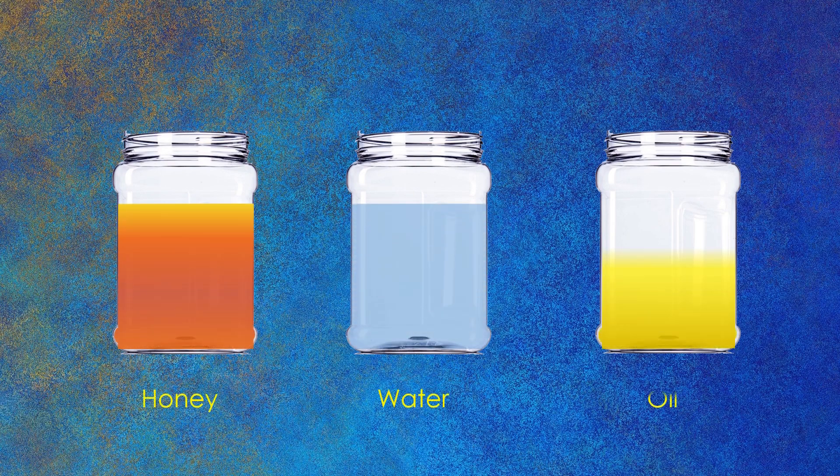you will observe that the ball reaches the bottom fastest in water, then in oil, and last in honey. This is due to a property that represents the internal resistance of a fluid to motion, and that property is known as viscosity.